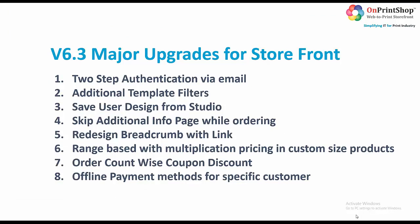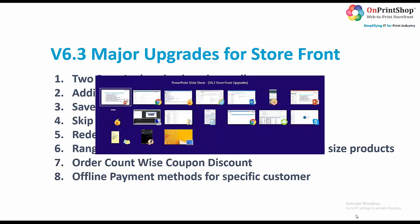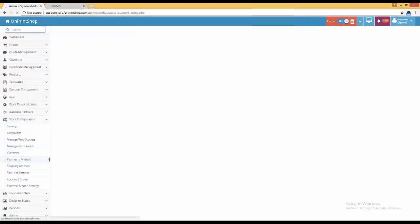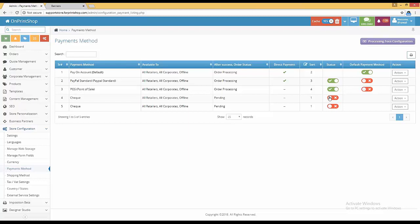The next upgrade is offline payment method for specific customers. An offline payment method, such as check, is one you don't want to give to all customers — only specific ones. Now you can map a specific payment method to a specific customer. To configure this, go to admin, then configuration, payment methods. Find a check payment method that is disabled — add the offline payment method, make it disabled globally, then go to the customer.